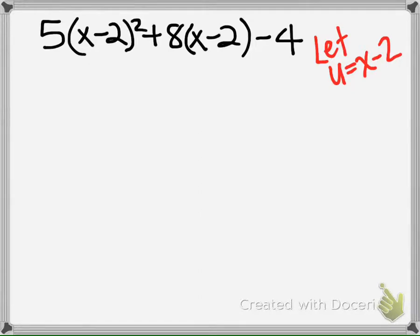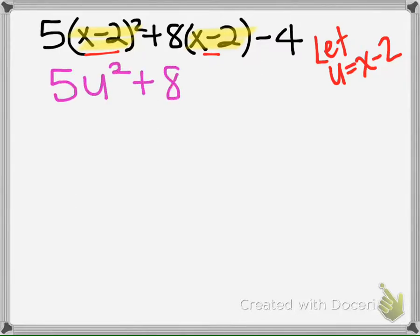Let's go ahead and try this one here. First thing when I see this — it's a trinomial, but this kind of looks weird. So it would be much easier if it was not (x minus 2) squared, but instead u squared and 8u. So I'm going to let the x minus 2 be replaced with a u substitution momentarily, and I'm going to plug in a u here and a u here. And now I'm going to factor this.